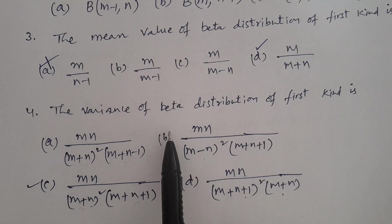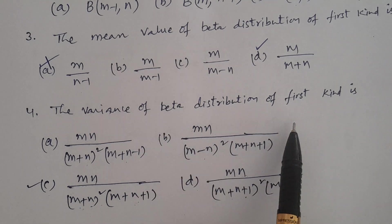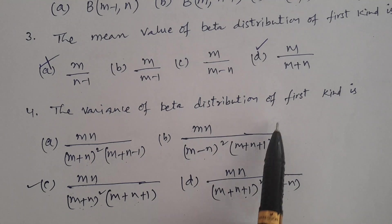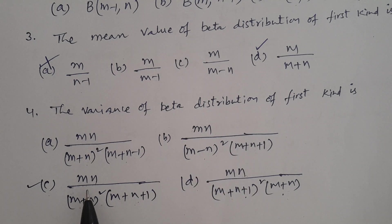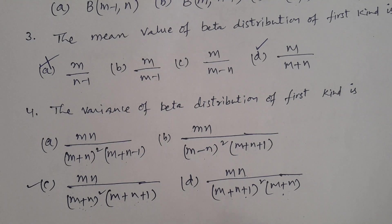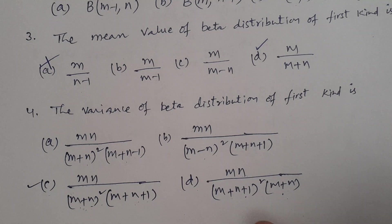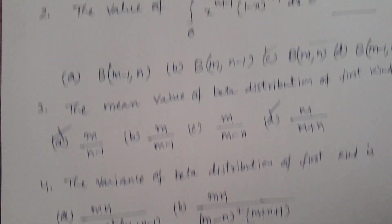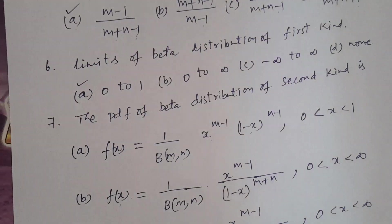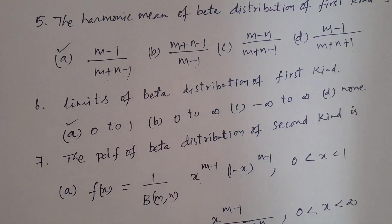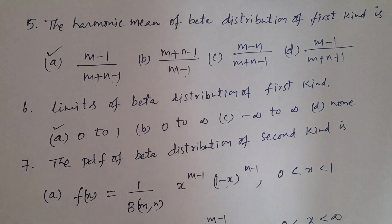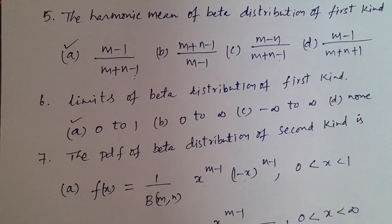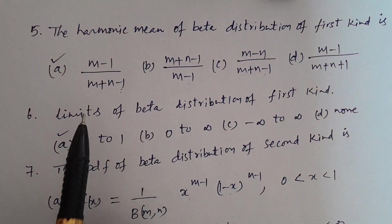In Telugu — the variance of beta distribution of first kind, beta distribution of first kind yaka variance nta: Option C — mn/(m+n)² · (m+n+1) — is the correct answer for variance. Now we move to question number 5: The harmonic mean of beta distribution of first kind.